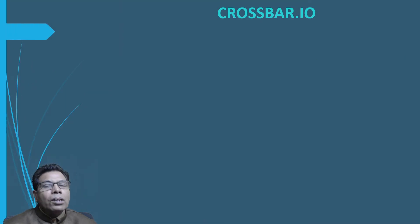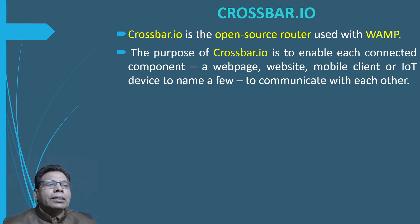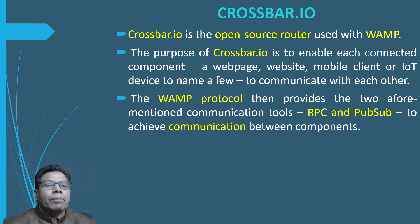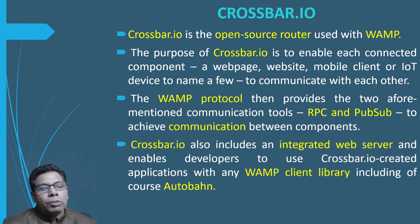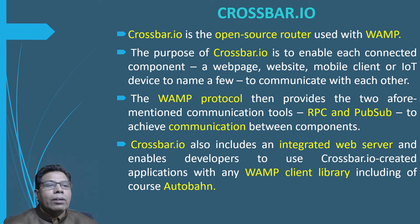Crossbar.io is an open source router used with WAMP. Its purpose is to enable each connected component — web page, website, mobile client, or IoT device — to communicate with each other. The WAMP protocol provides the two communication tools, RPC and pubsub, to achieve this communication. Crossbar.io also includes an integrated web server and enables developers to use applications with any WAMP client library, including Autobahn.